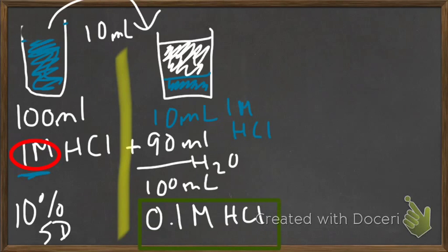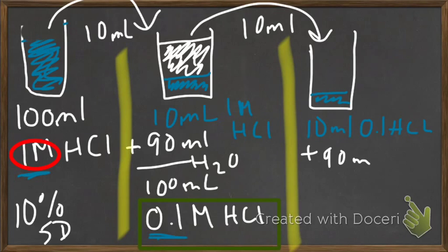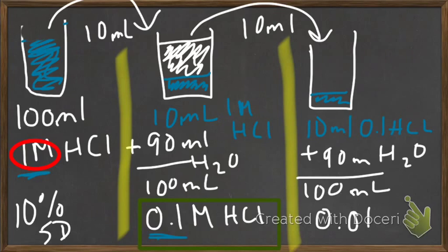So we started off with 1, and we ended up with 0.1. We can now take what we just made and make it even less concentrated if we take another 10 milliliters. Put that into a new beaker. So again, 10 milliliters of our 0.1 HCl. And if we add 90 milliliters of water, H2O, we will end up with 100 milliliters. Volume remains the same, but our concentration is now 0.01 molar HCl.